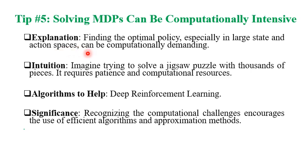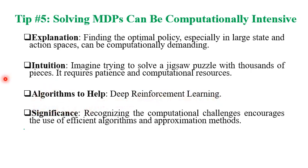This attention to future reward and long-term goal is the feature that distinguishes reinforcement learning from optimal control theory. When we have a larger state and action space, solving an MDP (Markov decision process) is computationally demanding. Deep reinforcement learning uses neural networks as function approximators to handle large state and action spaces.